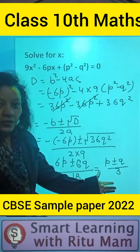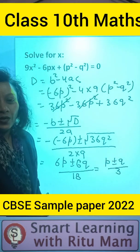So (p + q)/3 and (p - q)/3, these two are the values of x.